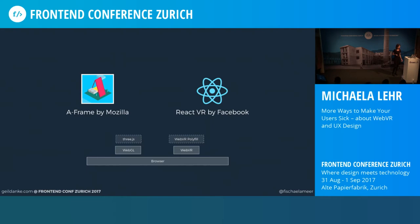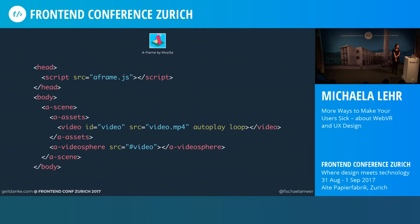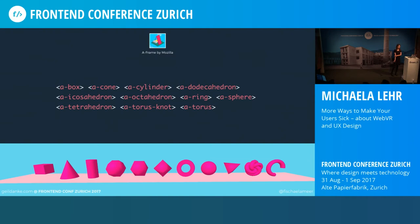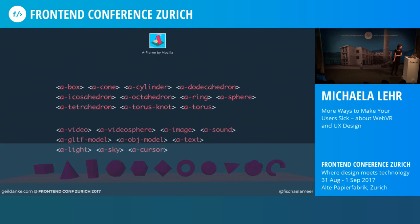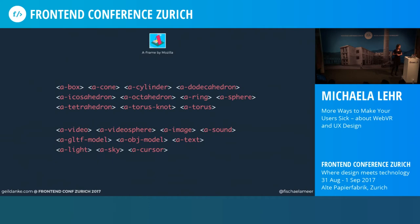A-Frame is based on HTML and provides a declarative, extensible, and composable structure to Three.js — what they call an entity component system. To get started with A-Frame, you just need to include the script and an A-Scene tag to set up the VR scene. Inside the scene, you work with predefined components in HTML or write your own components in JavaScript. A-Frame has many cool features: geometric components like a ring, cone, or torus; components for spatial sound; 3D models; and a skybox. I can only recommend that you try out A-Frame — it has good docs, Glitch and CodePen starter kits, and a really awesome visual inspector for your 3D scenes.